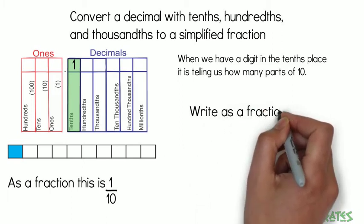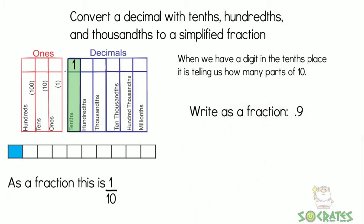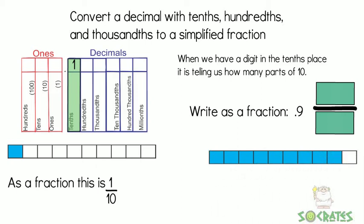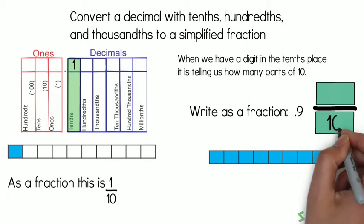Write as a fraction 0.9. So we have 10, so we have 9 out of those 10, and that leaves us with 9 over 10, or 9 tenths.